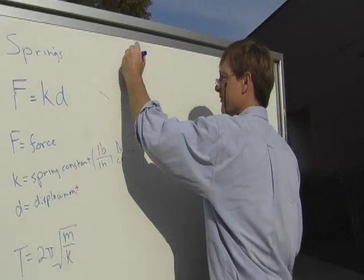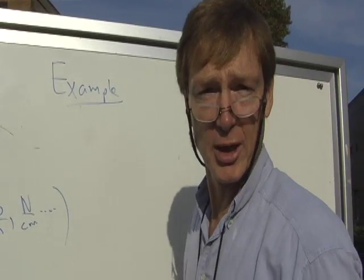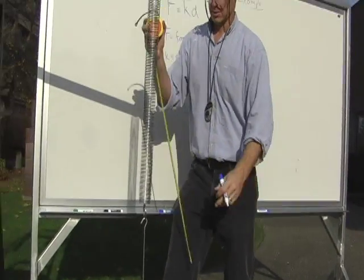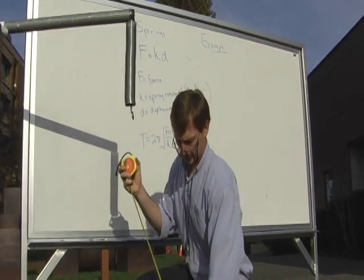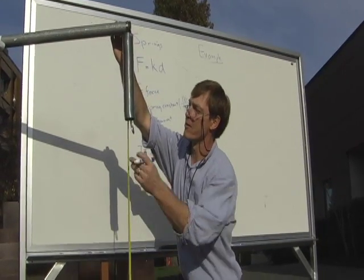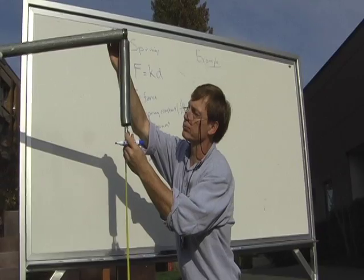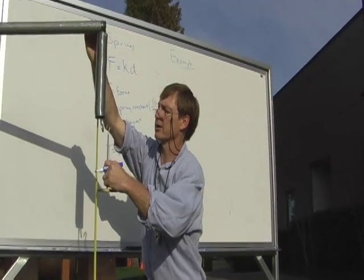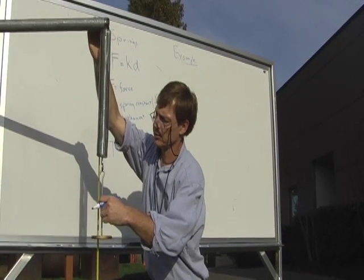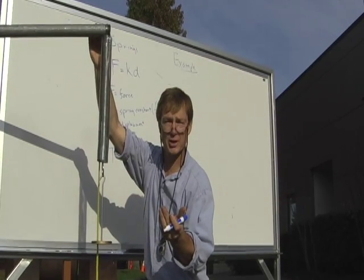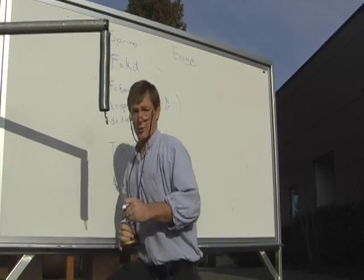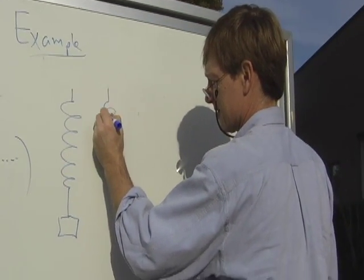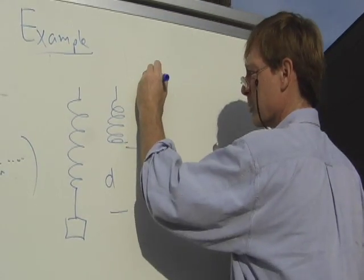Let's do an example. First, we'll calculate the spring constant of the spring, and then we'll figure out its period of oscillation. Right now the end is hanging at 39.0 centimeters. I'm going to stick 500 grams on here, and it's going to stretch it to 53 centimeters. 53 minus 39, that's 14 centimeters. So the displacement is 14 centimeters.